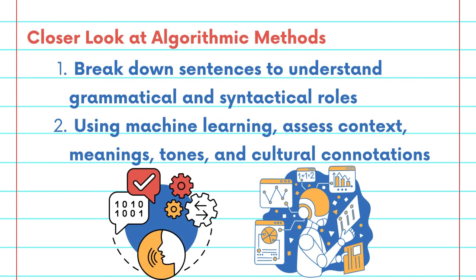It begins by parsing the language, breaking down sentences into their constituent parts, and understanding their grammatical and syntactical roles. Then, leveraging the power of machine learning, it assesses context — not just the words themselves, but their implied meanings, tones, and even their cultural connotations. This process is akin to a highly skilled linguist interpreting a dense, multi-layered poem.